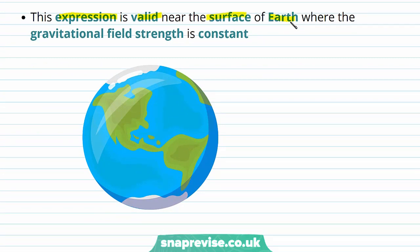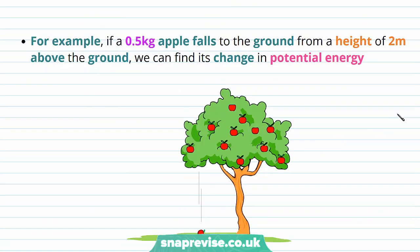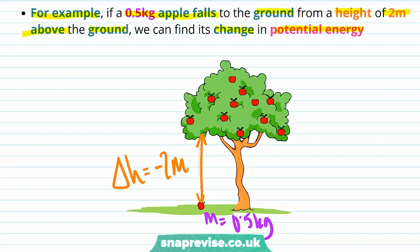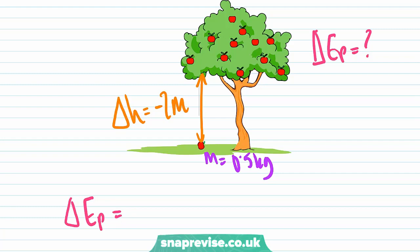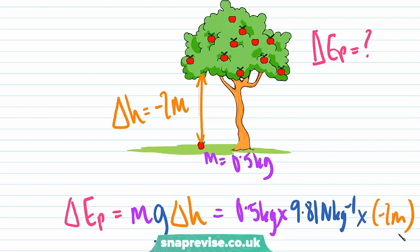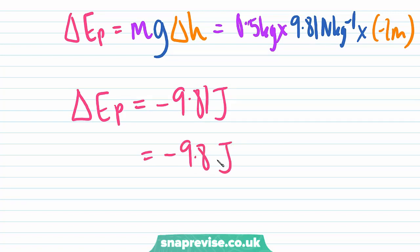This expression is valid near the surface of the Earth, where the gravitational field strength is constant at 9.81 newtons per kilogram. For example, if a 0.5 kg apple falls from a height of 2 metres, delta H is minus 2 metres. Using delta Ep = M × G × delta H, we get 0.5 × 9.81 × (−2), which gives delta Ep = −9.81 joules, or −9.8 joules to two significant figures.